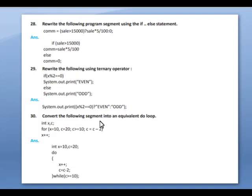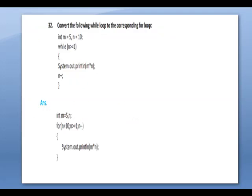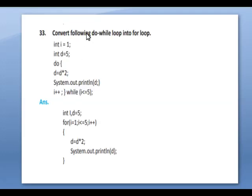Convert the following segment into an equivalent do-while loop. The given program is in for loop form, so you have to change it using a do-while loop. Also convert the following while loop to a corresponding for loop, and convert the following do-while loop into a for loop.